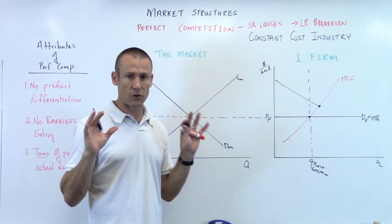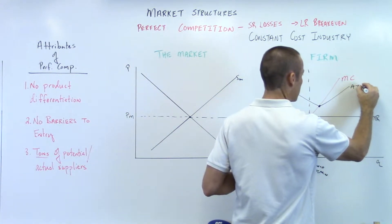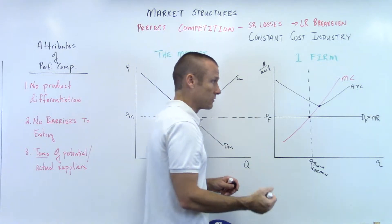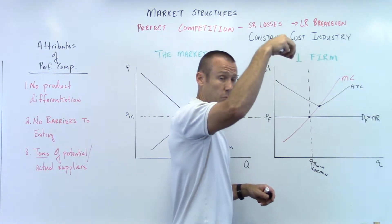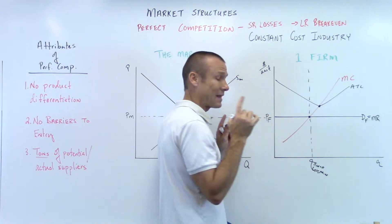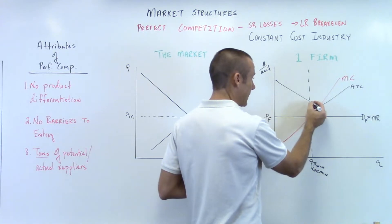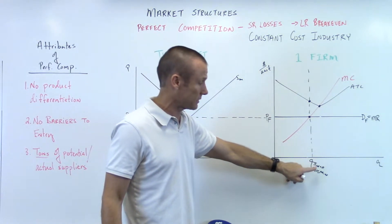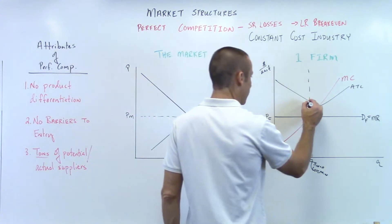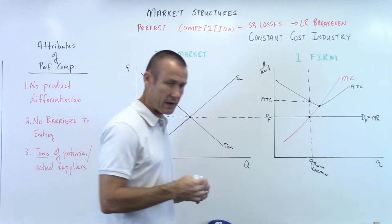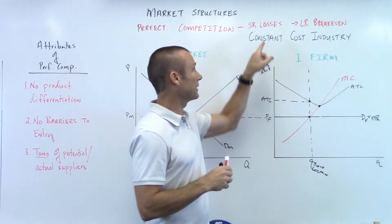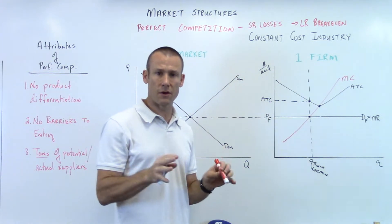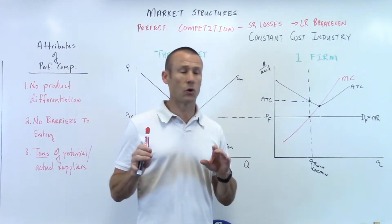I'm downward sloping until I hit MC because as long as MC is below ATC, it's pulling the average down. When MC is above ATC, it's pulling the average up. That's my minimum ATC, but the dot I need is right there at that output level — the vertical distance is the average total cost at that level of output. Hopefully you can now see the losses happening in the short run — that box right there are the short run losses.